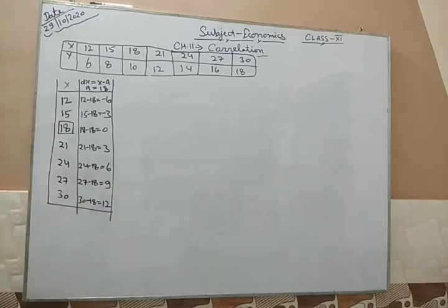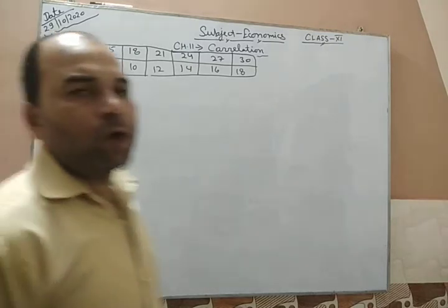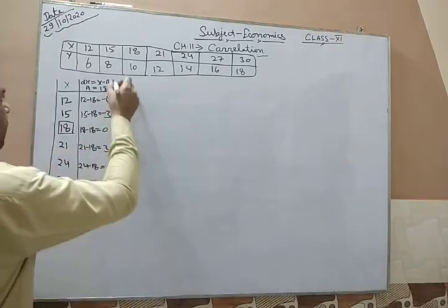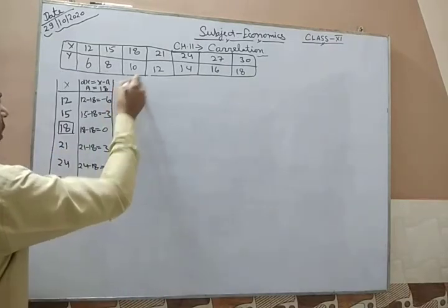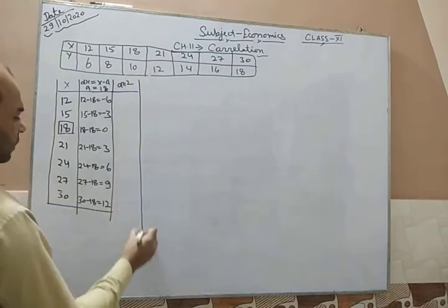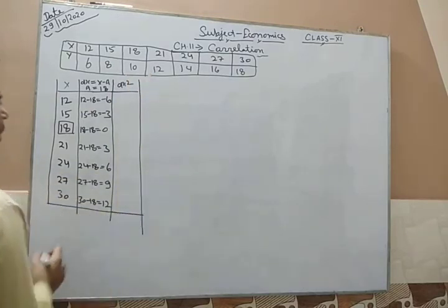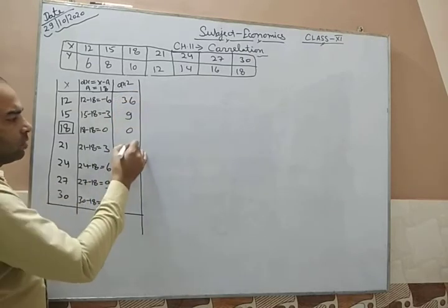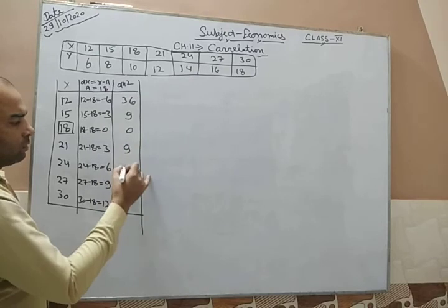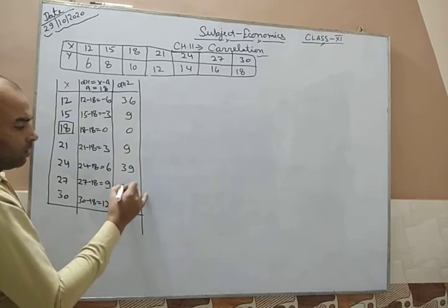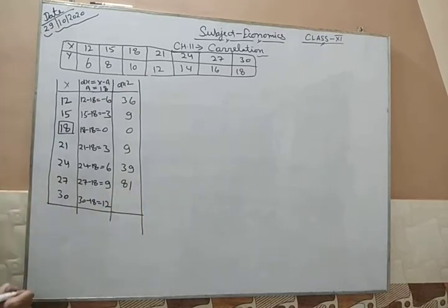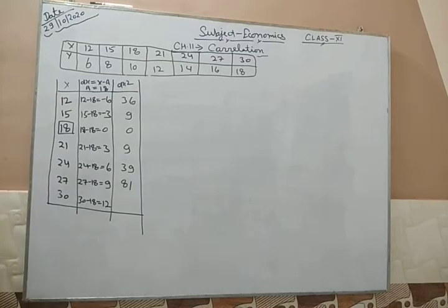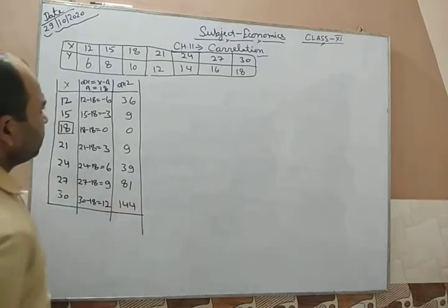Now we have to square each deviation to get dx squared. The values are: (−6)² = 36, (−3)² = 9, 0² = 0, 3² = 9, 6² = 36, 9² = 81, and 12² = 144.